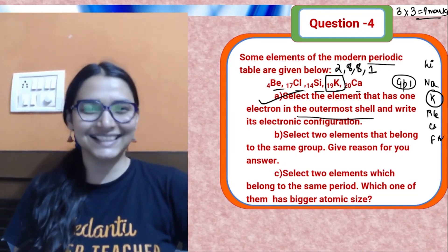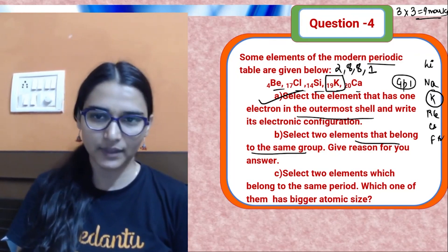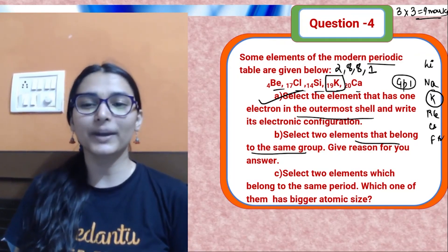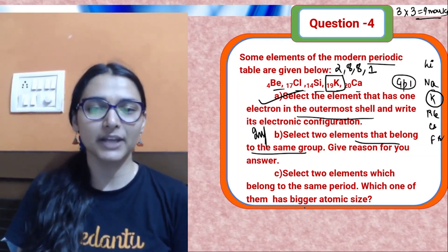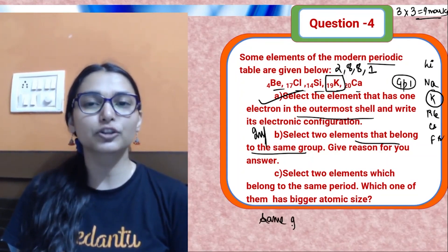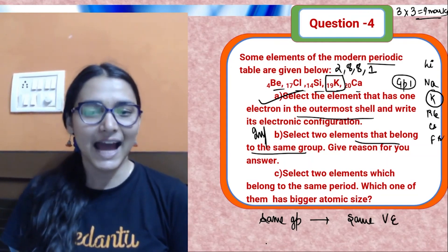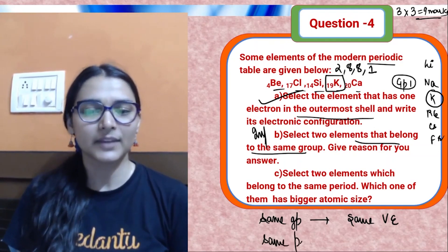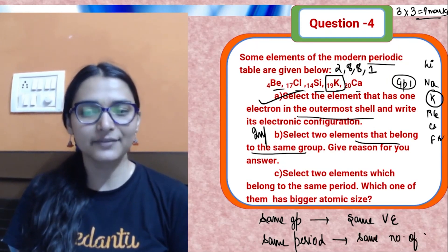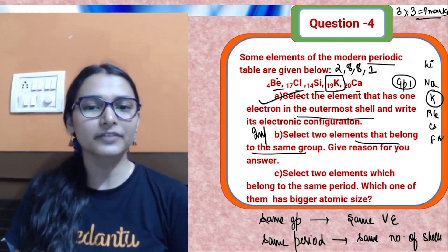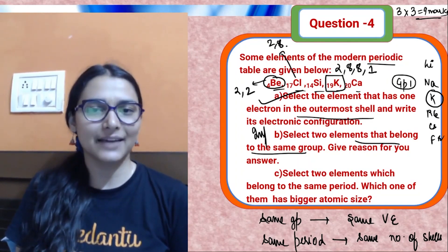Group 1 elements are lithium, sodium, potassium, rubidium, cesium, francium — not considering hydrogen. From the given elements, potassium is in Group 1. Write its configuration: atomic number is 19, so configuration is 2,8,8,1. That's one mark in your pocket — easy.